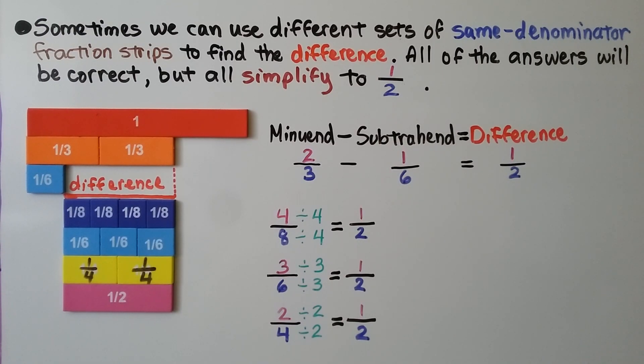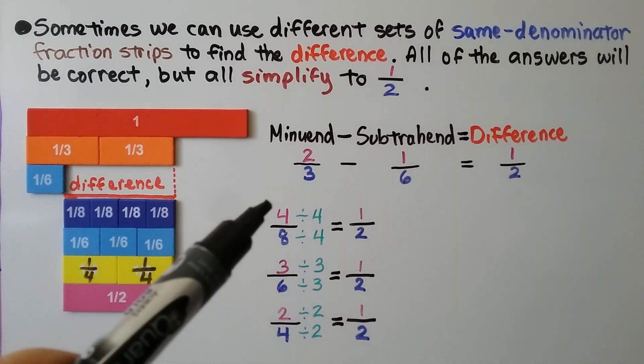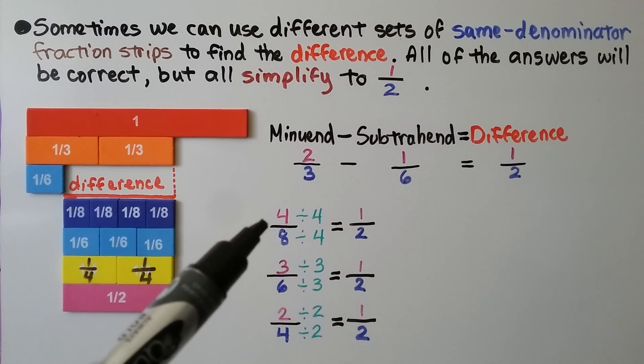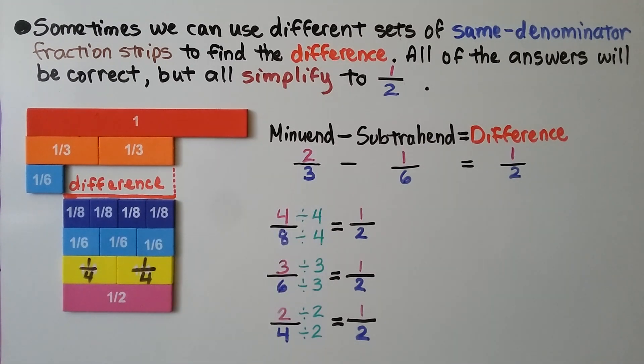Sometimes we can use different sets of same-denominator fraction strips to find the difference. All of the answers will be correct, but they'll all simplify to one-half. We have two-thirds minus one-sixth. We can see four-eighths fits perfectly, but when we divide the numerator and denominator by their greatest common factor, four, it equals one-half.